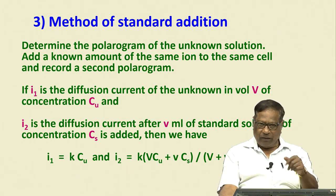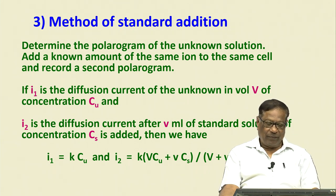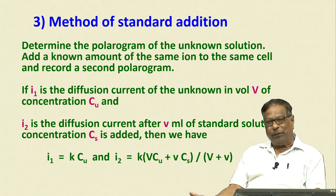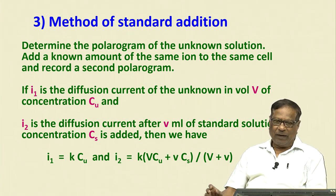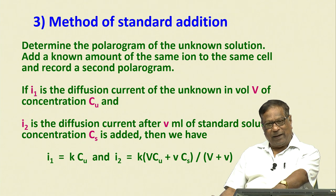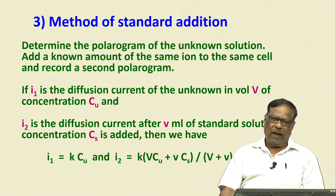I₁ = k × C_u, where k is the proportionality constant. I₂ corresponds to the sum of currents from the unknown (volume V, unknown concentration) plus the standard (volume v, concentration C_s). The total volume is V + v, and I₂ is proportional to the concentrations of both unknown and standard in the total volume (V + v).